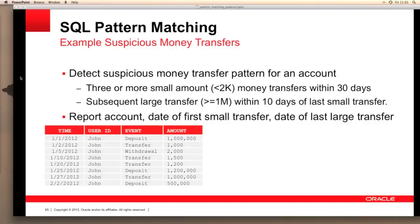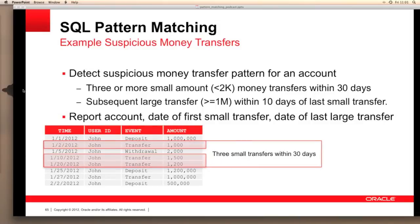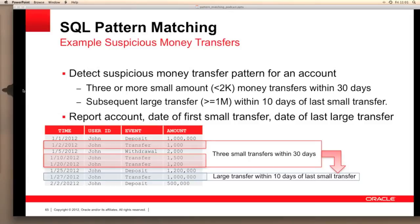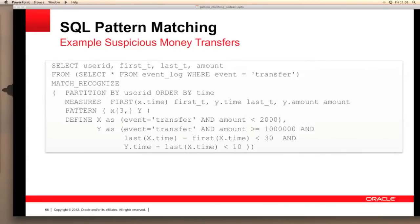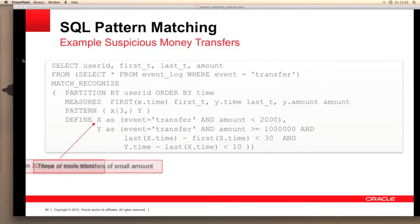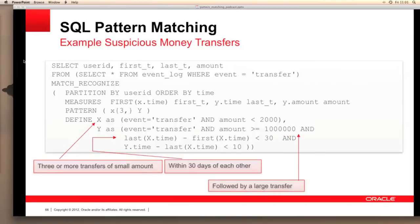For example, you might need to search for behavior that seems suspicious when there's a transparent transfer of funds. The typical suspicious transfer could be defined as three or more small money transfers of less than $2,000 within 30 days, followed by a larger transfer of a million dollars within 10 days of the last small transfer. Using the pattern clause, it's relatively easy to define a series of statements that first identify the small transfers, determine if the small transfers occurred within a specified time period — in this case 30 days — and then catch the last transfers and ensure they occurred within a specified time window of the last small transfer, in this case 10 days.